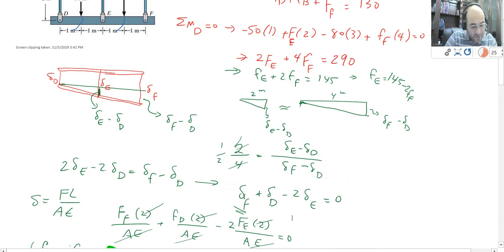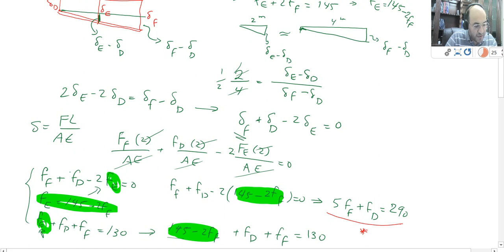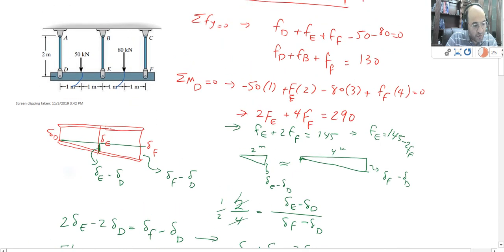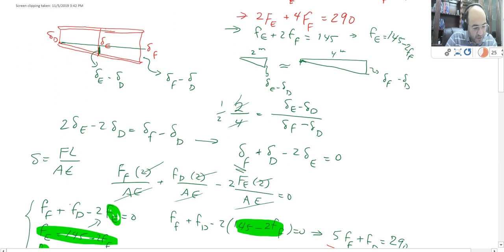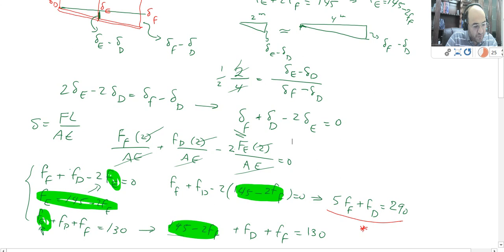I'm going to go with similarity between triangles, and then I found this amazing relationship. From this relationship, I'm going to substitute delta with FL over AE. Once you substitute FL over AE, I'm going to find my third equation. The third equation I found was FA—remember AE was the same for all of them, the area, the E was the same, they all cross off. For L, the initial length for all of them was two, they will cross off from each other as well. Then my third equation would be FF plus FD minus 2FE is equal to 0.